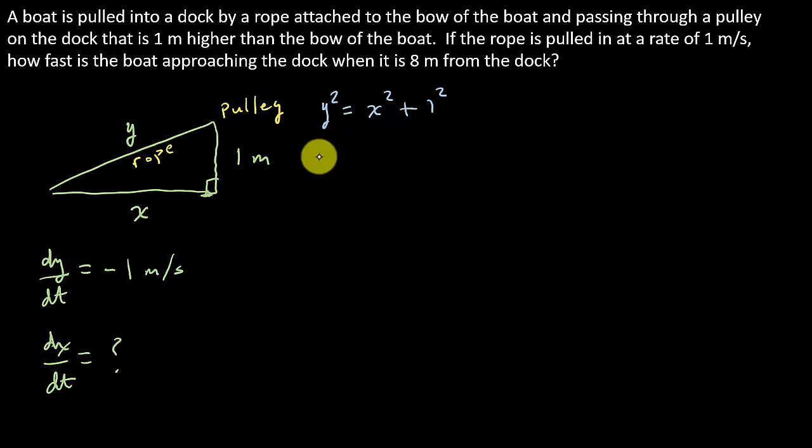So let's take the derivative. We're taking the derivative with respect to T. So I've got 2Y times DYDT equals 2X times DXDT, and then the derivative of 1 squared, that's a constant, so that's zero.